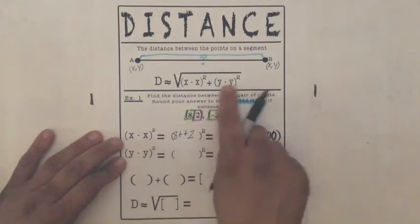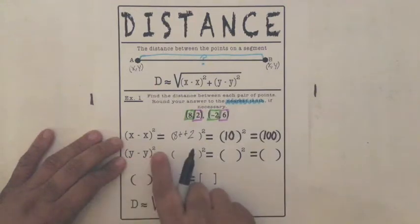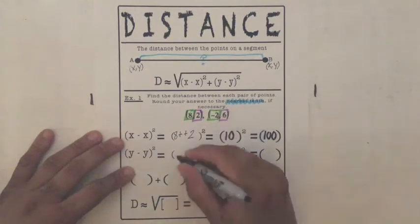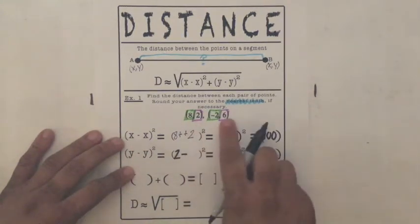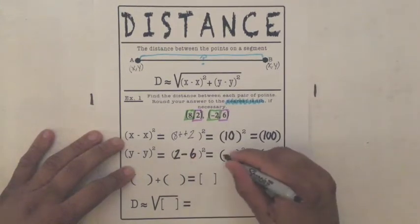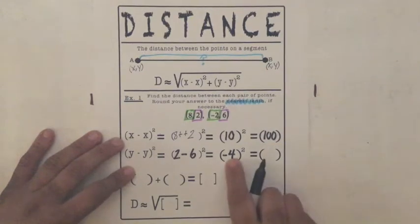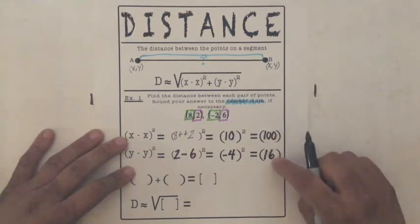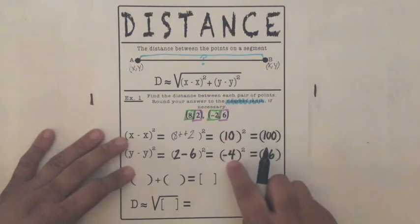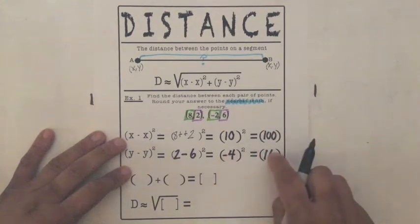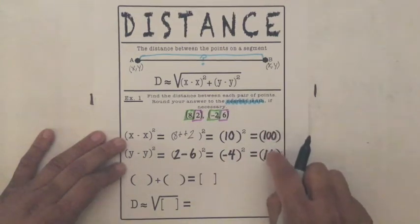Now let's do the Y minus Y squared part. So it says Y minus Y, purple minus purple, two minus six. A two minus six is a negative four. Negative four squared, negative four times negative four is positive 16. These two numbers here will always be positive. Because whether we get a positive or a negative, whenever we square, positive times positive is positive, negative times negative is also positive.